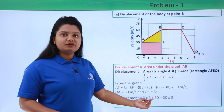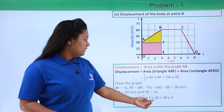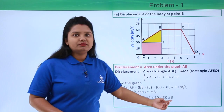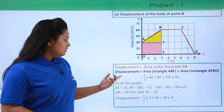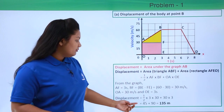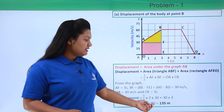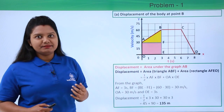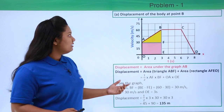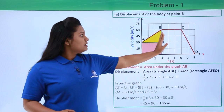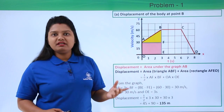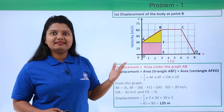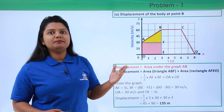The displacement becomes half times 3 times 30, plus 30 times 3, which yields 45 plus 90, giving 135 meters. So up to point B, the body has covered a displacement of 135 meters.